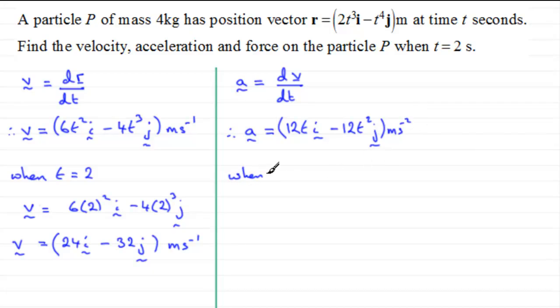Again, we're just interested when t equals 2. So that acceleration a is going to be equal to 12 multiplied by 2 in the i direction minus 12 multiplied by 2 squared in the j direction.